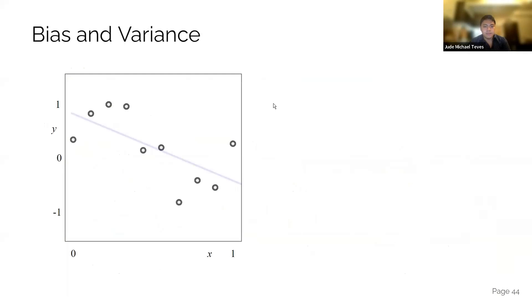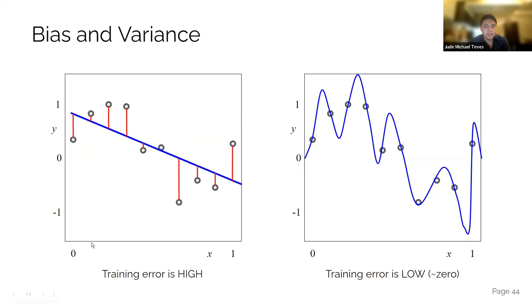Bias and variance. Some concepts in model evaluation. Training error is high because you're using this line to model this function that we have here. And then the training error is low, zero, because this is overfitted.